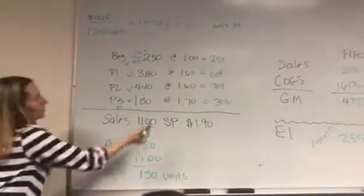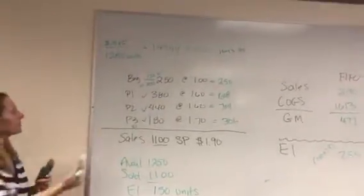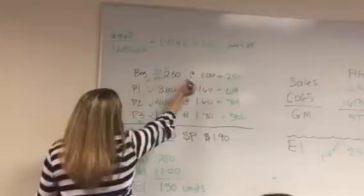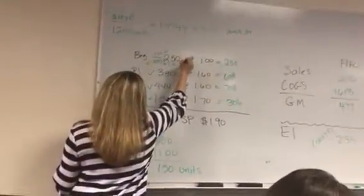So now that we have established which units we will count in our cost of goods sold, let's go add up the cost of those. This 100 units is times $1 each, so that's going to be $100 worth of cost.